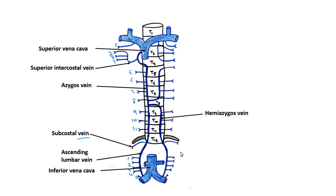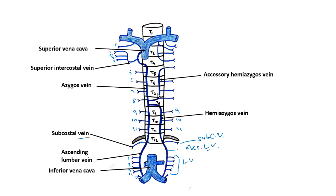Then we have the hemi-azygous vein: the lumbar veins, ascending lumbar vein, and left subcostal vein. It will receive the 9th, 10th, and 11th intercostal veins, and at the level of T8 vertebra it will join with the azygous vein. Above that we have the accessory hemi-azygous vein, which receives the 5th, 6th, 7th, and 8th posterior intercostal veins and drains into the azygous vein. The second, third, and fourth join to form the superior intercostal vein.